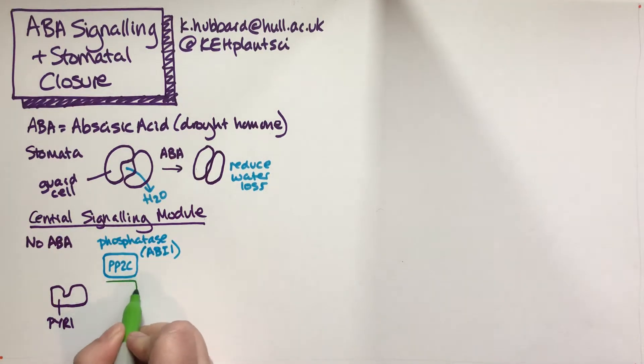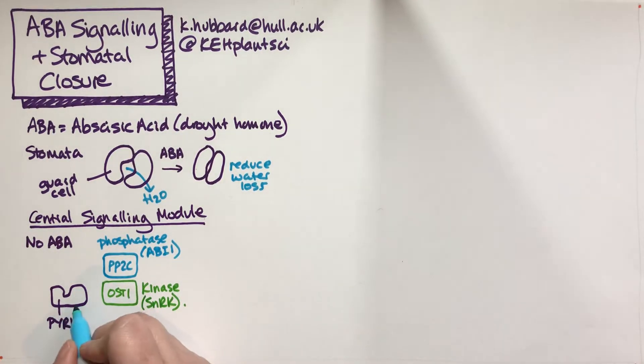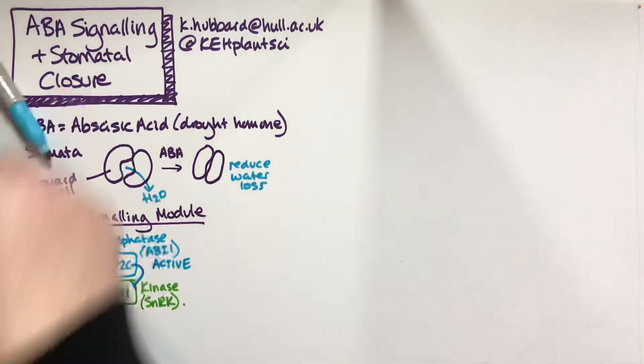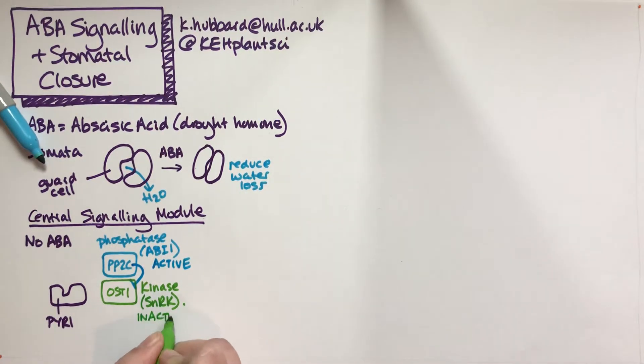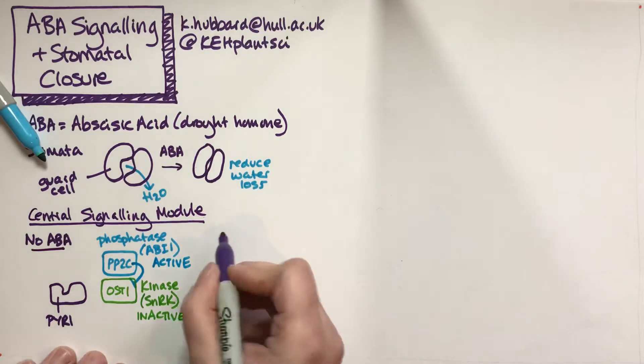The third protein is OST1, a kinase that phosphorylates things, sometimes known as SnRK. When there's no ABA, PYL1 is just sitting there not doing anything, PP2C is active and inhibiting OST1, so OST1 is inactive. OST1 would be wanting to send the signal to the rest of the cell, so with no ABA in the resting state, PYL1 is not doing anything and OST1 is inactive.